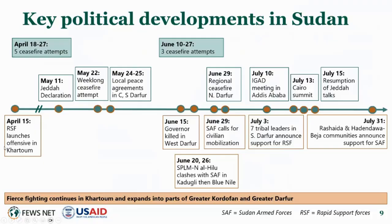Turning to the current situation, I'll start with a recap of key political and strategic developments. There is yet to be a successful ceasefire or breakthrough in peace efforts. Ceasefires through April, May, and June have all been violated, with intense fighting resuming immediately after each lapsed. In mid-July, multiple efforts were initiated by regional actors, including a meeting of the IGAD Quartet Group on July 10th in Addis Ababa, chaired by Kenya's President.